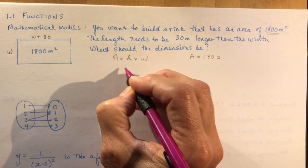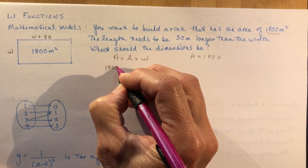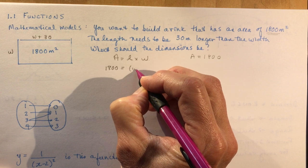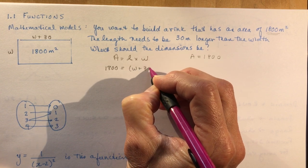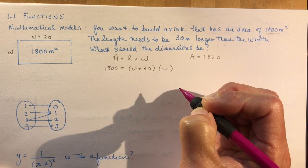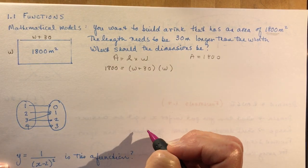Now you can see you can make a nice little equation here. We're going to have 1800 for the area is going to be the length, which we now call w plus 30, times w.